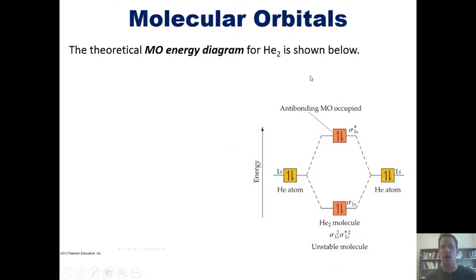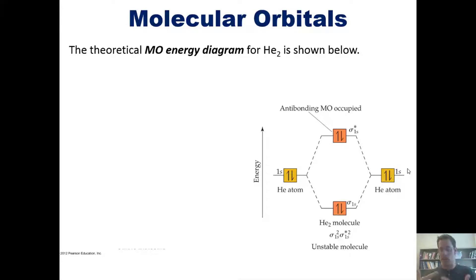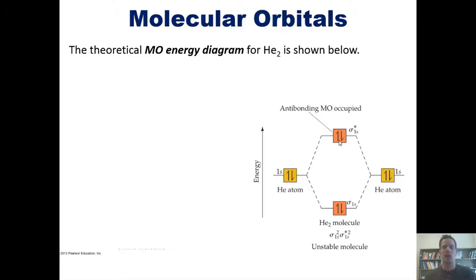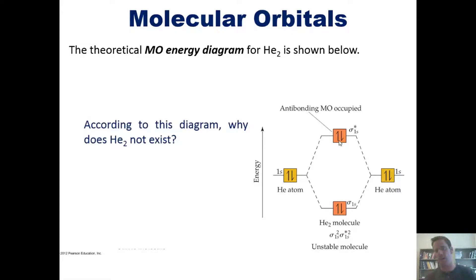We can see this in the hypothetical example of He₂. Each individual helium atom has two valence electrons, so when two helium atoms come together, there are four total electrons to work with. The theoretical He₂ molecule would form a bonding orbital and an anti-bonding orbital, and all four electrons would fill both boxes — two in the bonding, two in the anti-bonding. The stability from the bonding electrons is completely negated, so He₂ would blast apart and does not exist.